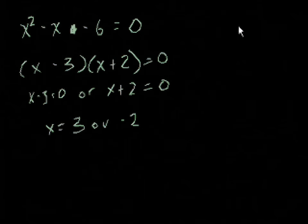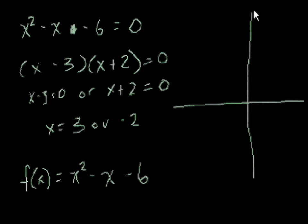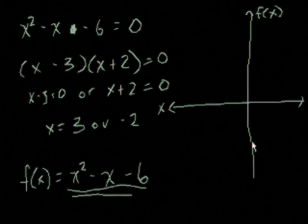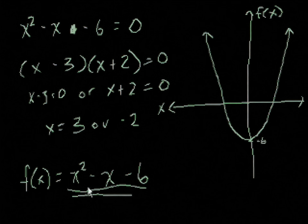A graphical representation of this would be: if I had the function f of x equal to x squared minus x minus 6, this axis is the f of x axis — you might be more familiar with the y-axis. And this is the x-axis. If I were to graph this equation, it'll look something like a parabola going through f of x equals negative 6, because when x equals 0, f of x equals negative 6.